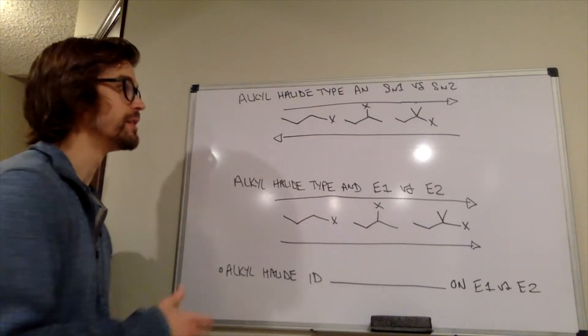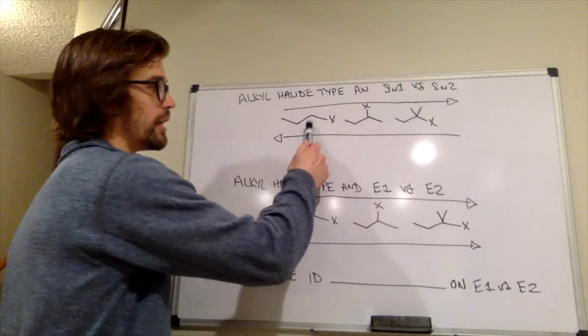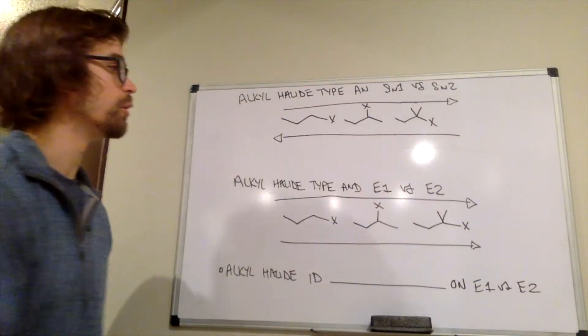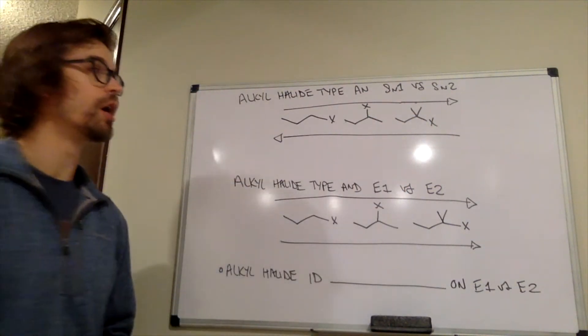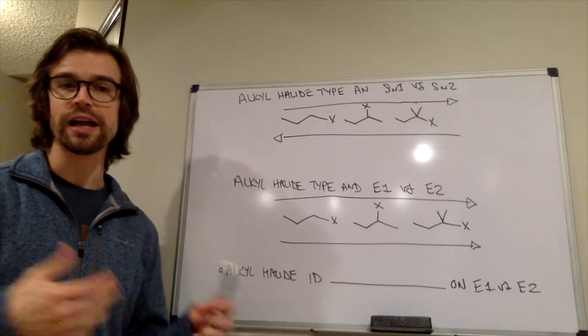So the first part of that is the alkyl halide type. So we have primary alkyl halide here, secondary alkyl halide and a tertiary alkyl halide here. So when we're thinking about SN1 versus SN2, which of these would be really good at SN1? Which of these would be really good at SN2?